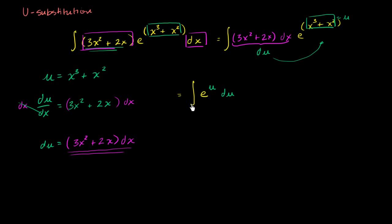And so what would the antiderivative of this be in terms of u? Well, the derivative of e to the u is e to the u. The antiderivative of e to the u is e to the u. So it's going to be equal to e to the u. Now there's a possibility that there was some type of a constant factor here, so plus c.